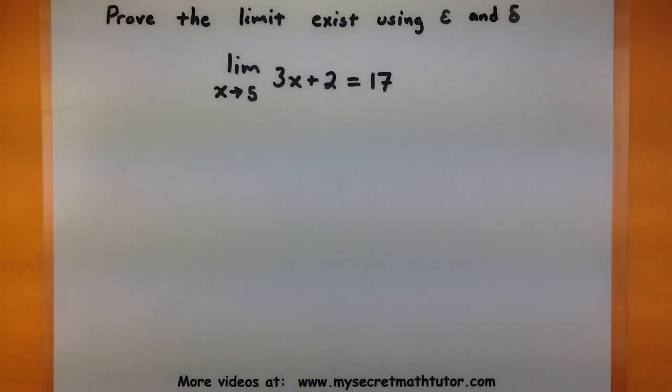In this video, I want to prove that the limit exists using epsilon and delta. The limit we're looking at is the limit as x approaches 5 of 3x plus 2. We're going to use epsilon and delta to show that this limit really does equal 17.